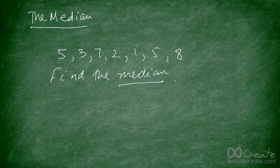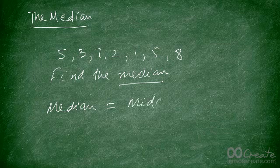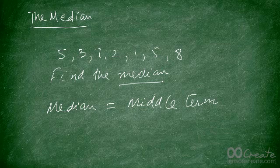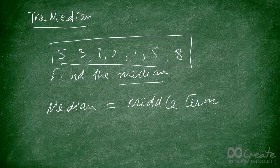So what exactly is the median? The median is nothing but the middle term. You find the middle term of the set of data and that's your median. But remember an important distinction: the data has to be arranged in ascending or descending order first, and then you find the middle term. Looking at the data given, it's not arranged in ascending order, so the first thing you need to do is arrange it.